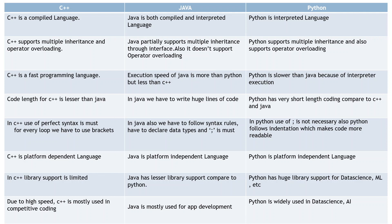The third difference is execution speed. C++ is the fastest programming language. Java's execution speed is greater than Python but less than C++. Python is the slowest because of interpreter execution — in interpreted languages there is one extra step of interpreting the machine code, which makes it a little slower compared to the rest.